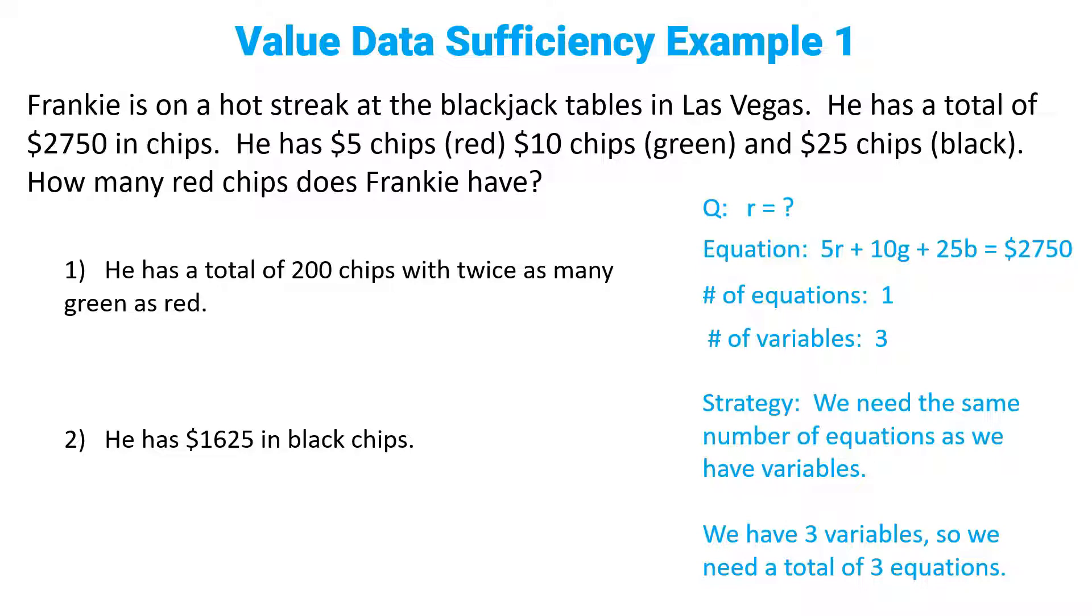Statement one says he has a total of 200 chips with twice as many green as red. Okay, what does that mean in math? He has a total of 200 chips. That means r plus g plus b equals 200. What does twice as many green as red mean? That means g equals 2r. We said that we needed two more equations, and guess what? Statement one gives us two more equations. That's sufficient.